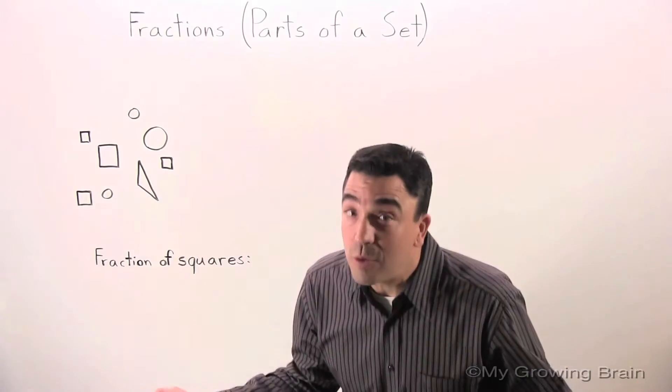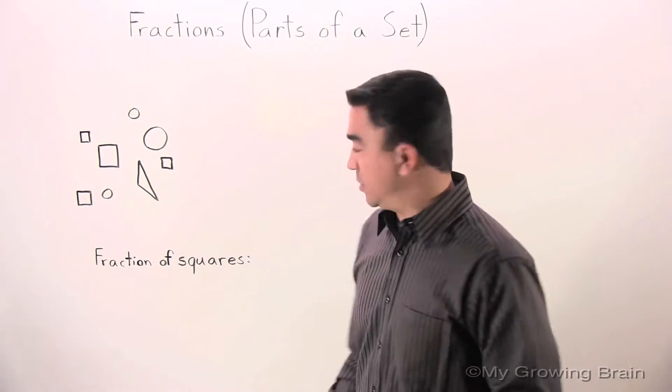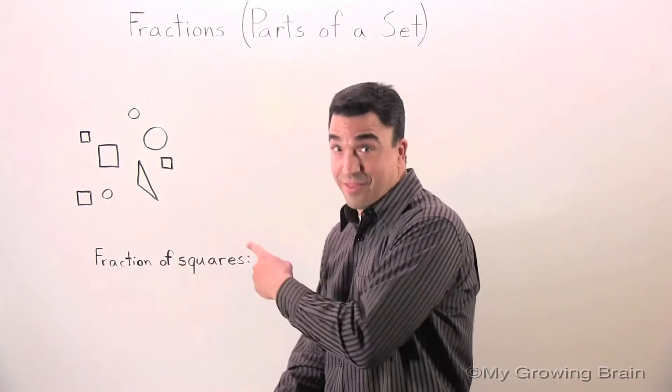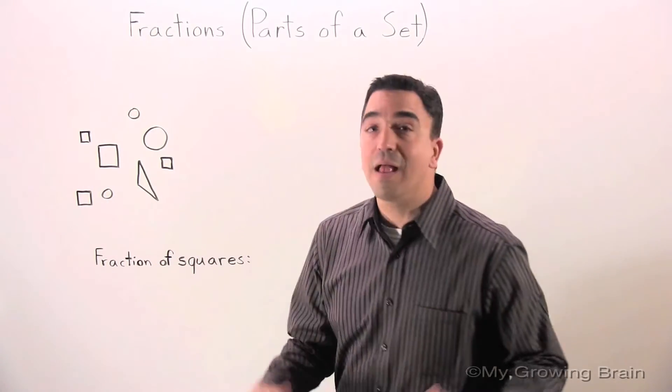First thing we have to do is find the denominator. The denominator is the total number of shapes in this set. Let's count.